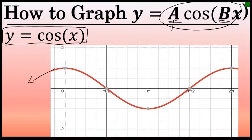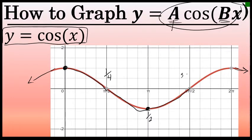The graph of y equals cosine of x can be described as a wave that repeats itself infinitely to the left and to the right. What repeats is a curve that begins above the x-axis, crosses the x-axis one-fourth of the way through one cycle, gets to its low point halfway through, goes back up to the x-axis three-fourths of the way through, and returns to its highest point at the end of one cycle.